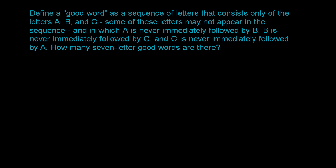So let's think about this. There are letters with just A's, B's, and C's — it could be all A's, all B's, all C's, because some letters might not appear. A is never immediately followed by B, so A can only be followed by another A or another C. B is never immediately followed by C, which means B can only be followed by an A or another B. And C is never immediately followed by A, so C can only be followed by another C or a B.